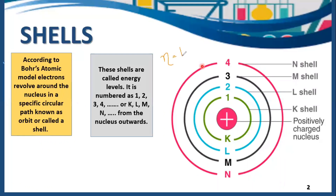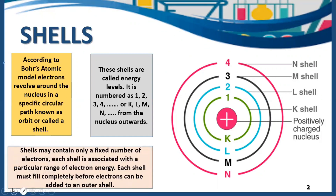If n is equal to 1, it is named as K shell. If n is equal to 2, it is named as L shell, and so on. Shells may contain only a fixed number of electrons. Each shell is associated with a particular range of electron energies. Each shell must be filled with its fixed number of electrons first, then the remaining electrons will move towards the next shell.